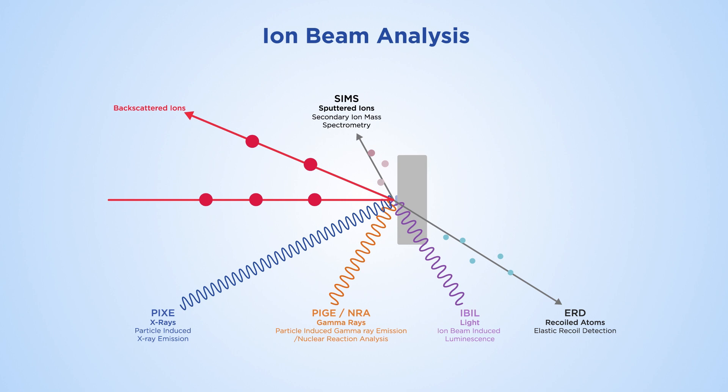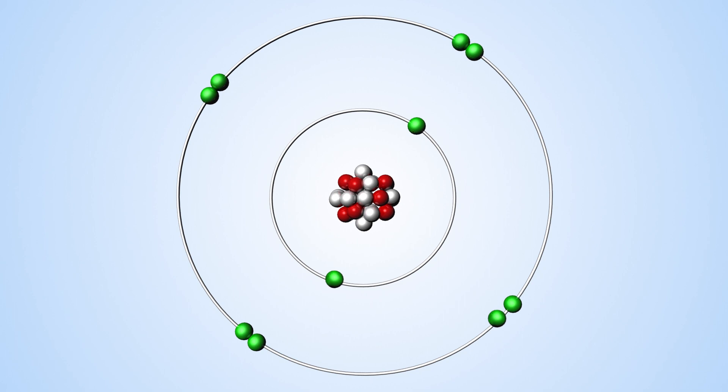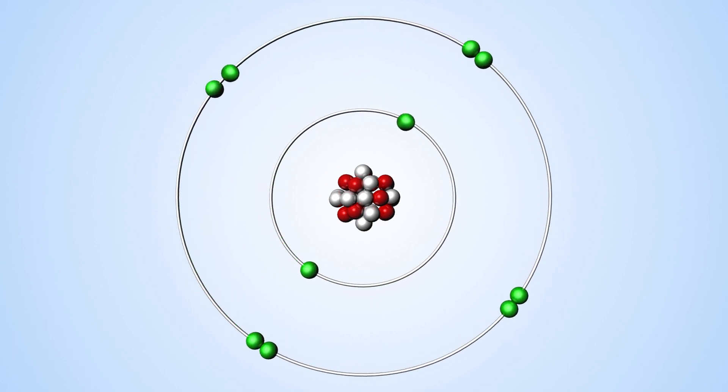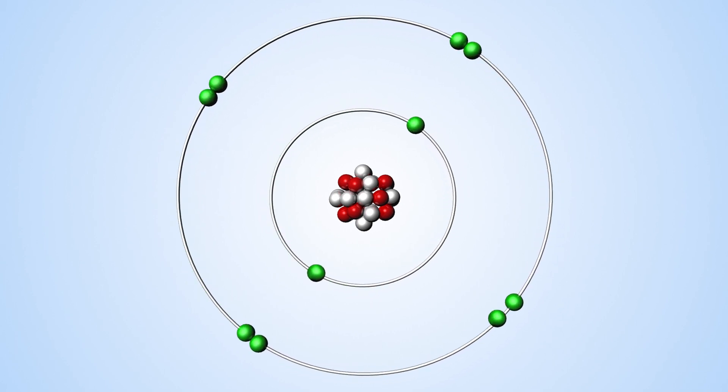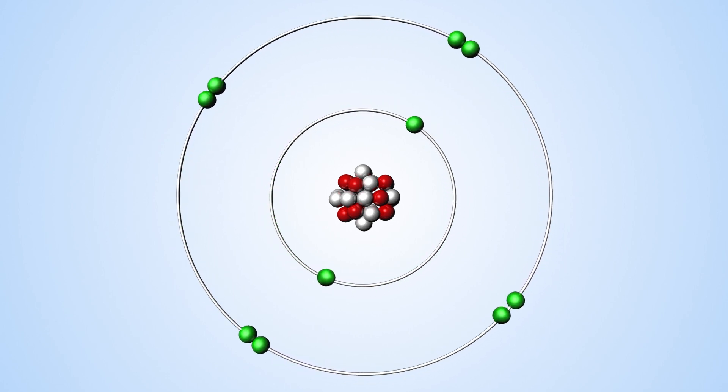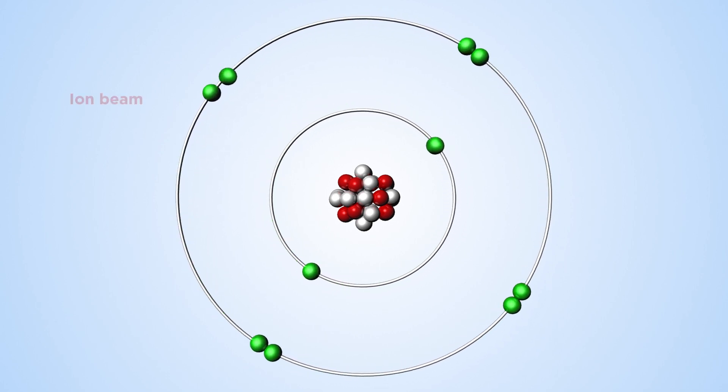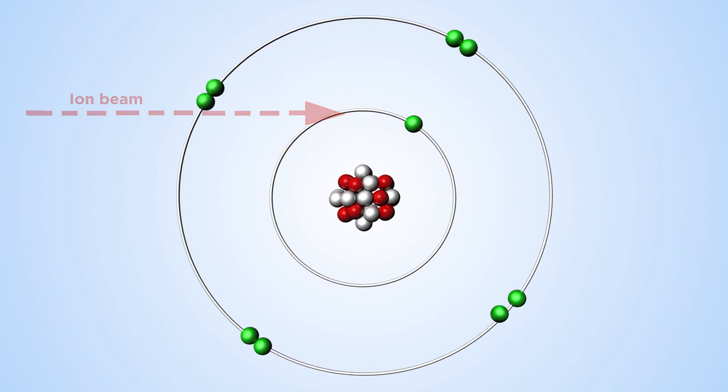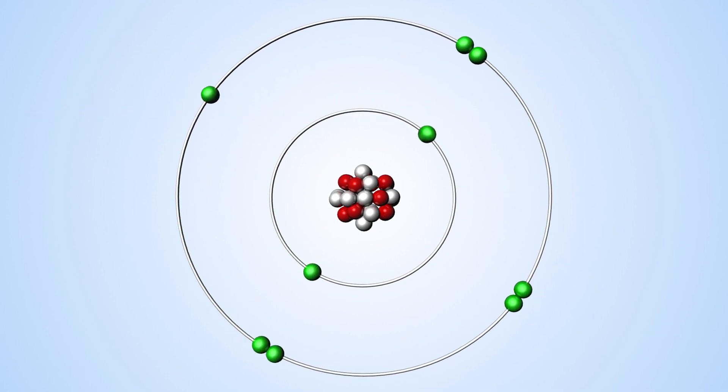Known as ion beam analysis, this approach encompasses a wide variety of techniques. One of the most widely used techniques is called particle-induced X-ray emission, or PIXE. Here, the ion beam knocks away an electron in some of the sample's constituent atoms, so that another electron orbiting further out will jump to fill its place.